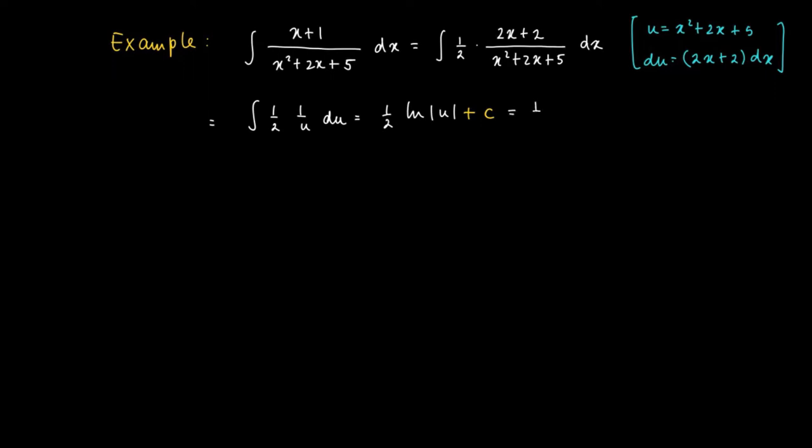And this one equals a half times the ln of x squared plus 2x plus 5. Or we may leave out the absolute value sign since x squared plus 2x plus 5 is irreducible and always larger than 0.